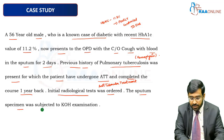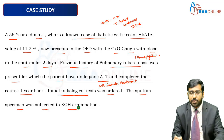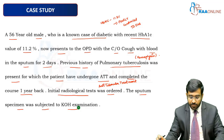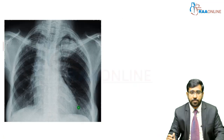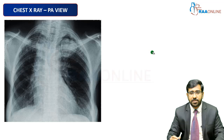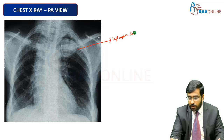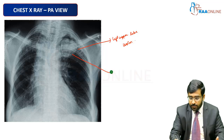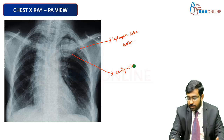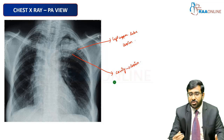An initial radiological test was ordered and the sputum specimen was subjected to a potassium hydroxide (KOH) wet mount examination. Looking at the chest X-ray, you can see involvement of the left upper lobe with a cavitary lesion visible in that region.